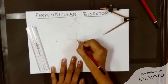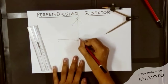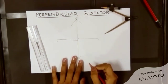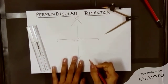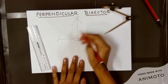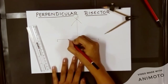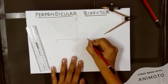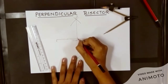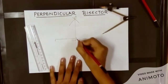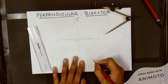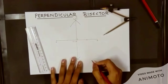This line is cutting the given line into two equal parts and it is making an angle of 90 degrees with the given line segment. That is why it is called a perpendicular bisector. Bisector means to make two equal halves, and perpendicular bisector means the line makes an angle of 90 degrees where it cuts.